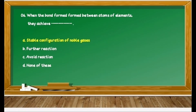Question 26: When the bond forms between atoms of elements, then it achieves dash dash. Option A: stable electronic configuration of noble gases; option B: further reaction; option C: avoid reaction; option D: none of the above. We know that when bond formation takes place, such atoms achieve a stable electronic configuration of noble gases. Therefore, option A is correct.